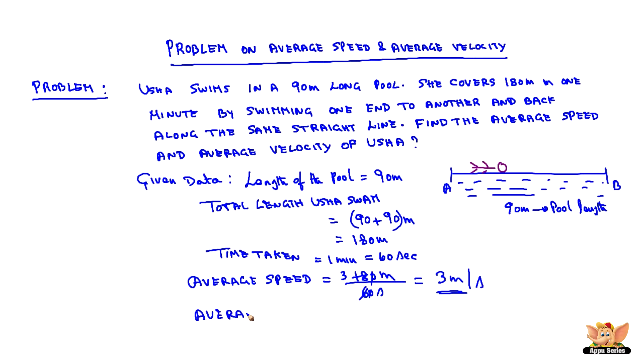In the same manner, the average velocity of Usha is displacement divided by time. In this case, the displacement is 90 from A to B and 90 from B to A. Time is 60 seconds, which gives 0 meters divided by 60 seconds, equals 0 meters per second.